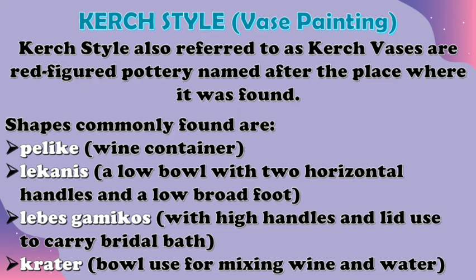Next is a method used in designing vases — the Kerch style, also referred to as Kerch vases, are red-figured pottery named after the place where they were found. Common shapes include the Pelaik, a wine container; the Lekanis, a low bowl with two horizontal handles and a low broad foot; the Lebes Gamikos, with high handles used to carry bridal bath water; and the Crater, a bowl used for mixing wine and water. Most common motifs were scenes from the life of women, mythological beings popular among people of the Black Sea, or scenes from mythical stories.